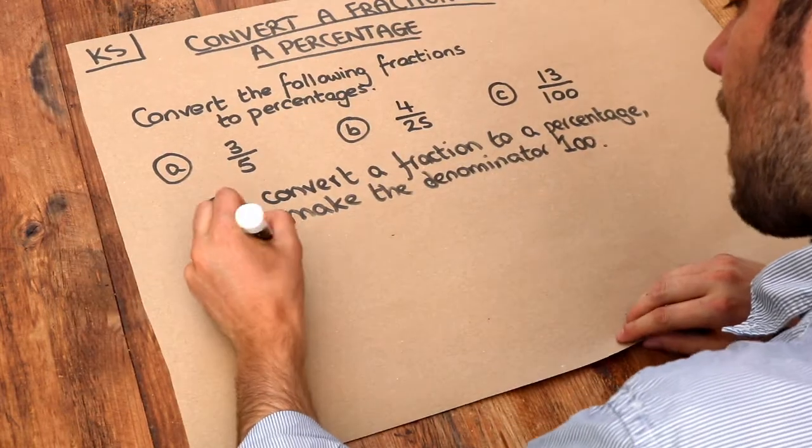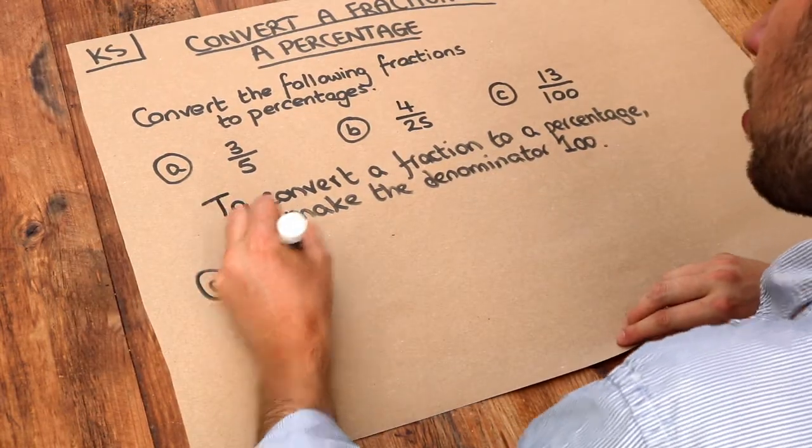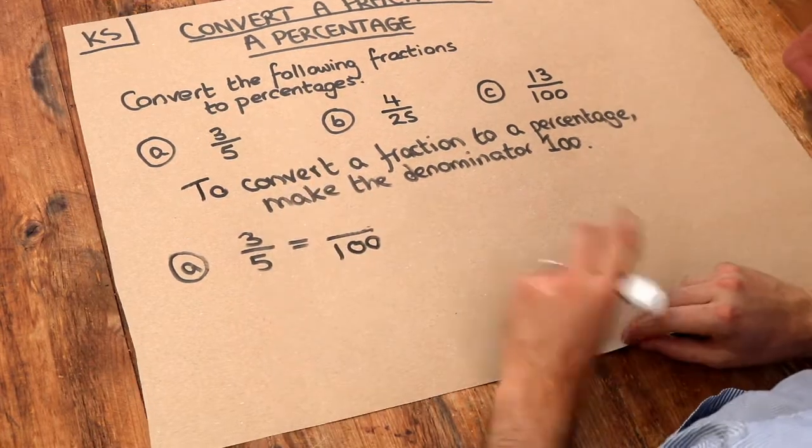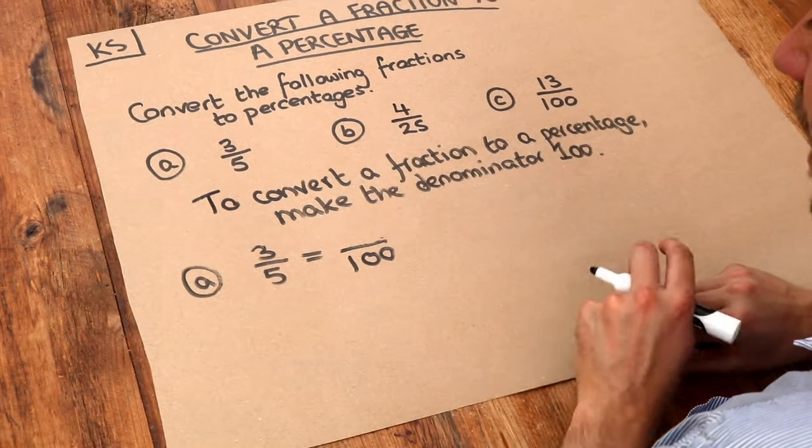We've got three-fifths and we want to find the equivalent fraction where the denominator is 100. So we need to get that over 100. Now what do we need to multiply 5 by to get to 100?